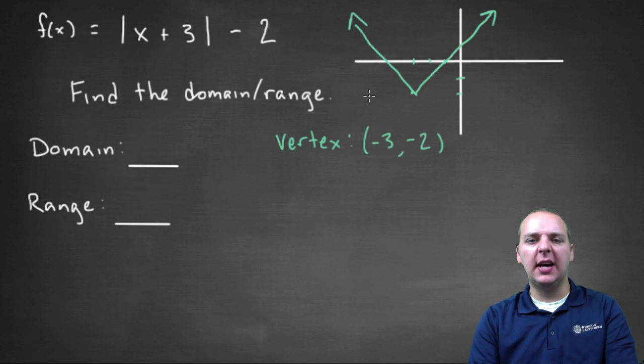So what is this guy's domain and range? Well, the domain is a gimme, it's a freebie. Automatically, just because it's the absolute value function, the domain is going to be all real numbers. So minus infinity to infinity.